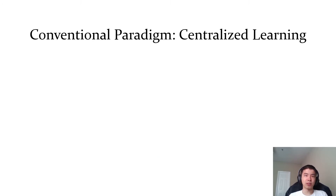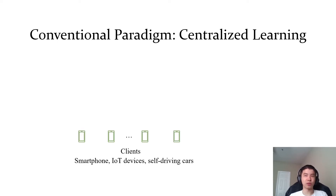As we may know, the so-called centralized learning is the widely used conventional machine learning paradigm. Suppose we are given some clients, which could be smartphone devices, IoT devices, or self-driving cars. Each client has some data.